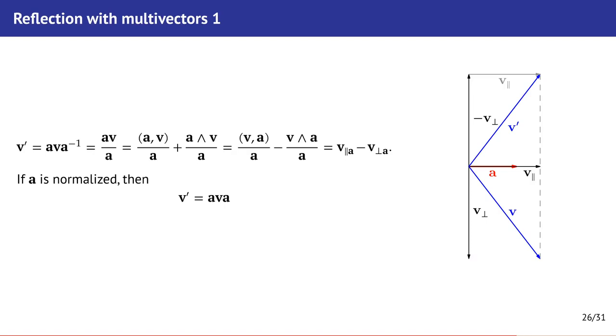Now let us consider same operation but with multivectors. If we multiply some vector v by the vector a from the left and its inverse from the right, we will get the reflection of the vector relative to the vector a. In the case of normalized vector a the formula will be even more simple. On this figure you can see the geometric interpretation of this action. It's almost clear.